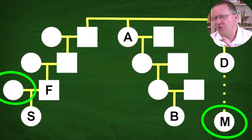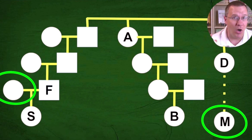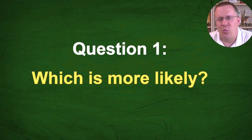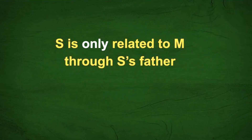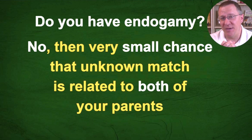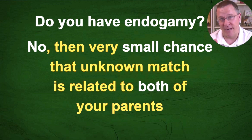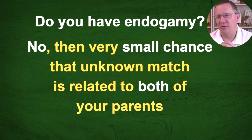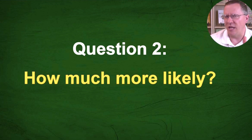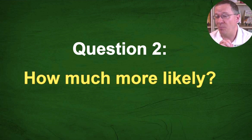In this case, the questioner wants to know whether M being related to S's mom is possible. The answer is yes, absolutely — that's always a possibility. But my first question is: which is more likely? Option one: S is only related to M through S's father. Option two: S is related to M through both her mother and father. There's one simple question to ask yourself: do you have endogamy? If the answer is no, then there's a very small chance that an unknown match is related to both of your parents. You can check this by looking at your match lists and seeing how many are related to both parents.